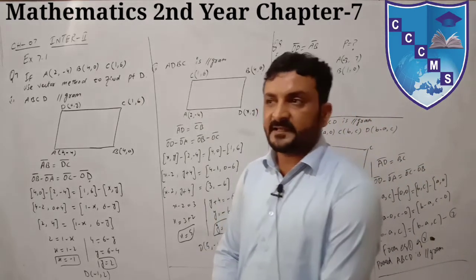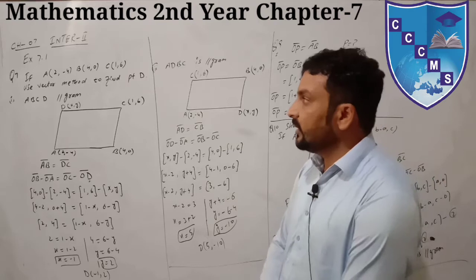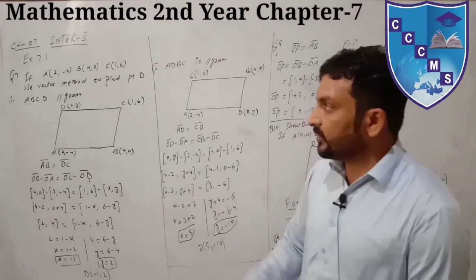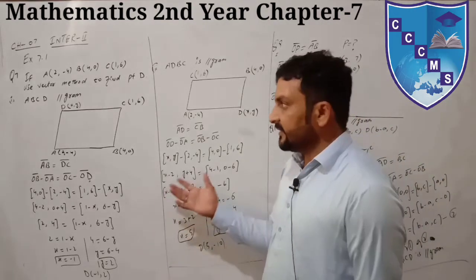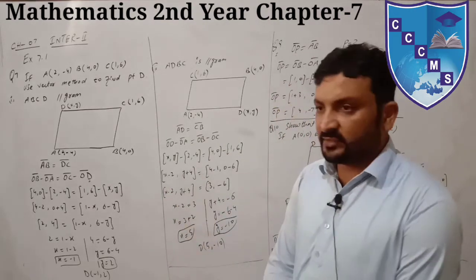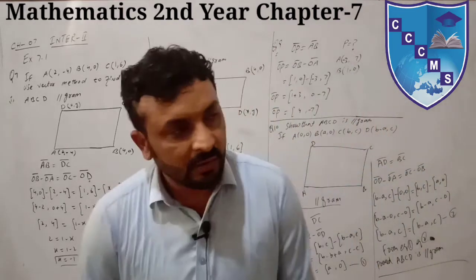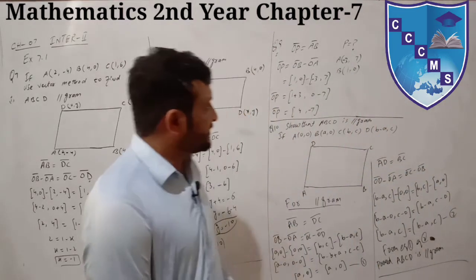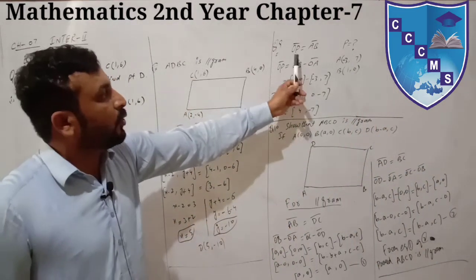In the same way, question number 8 is to be done similarly - 3 coordinates are given, you have to find the 4th point. Question number 9 is a separate question.